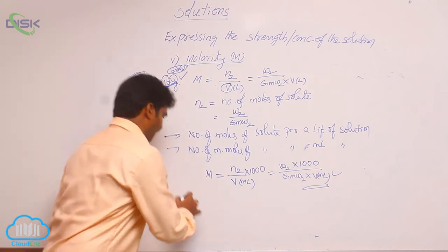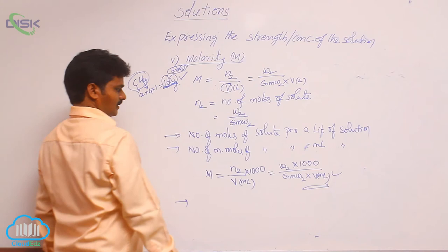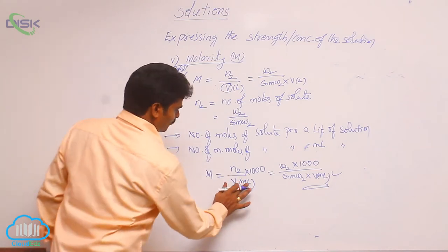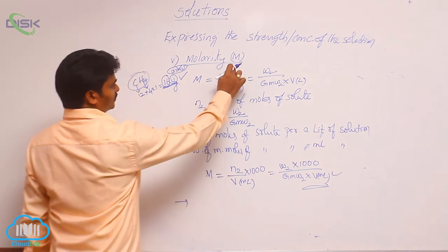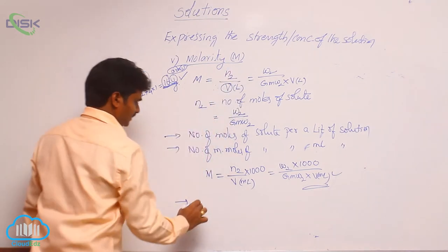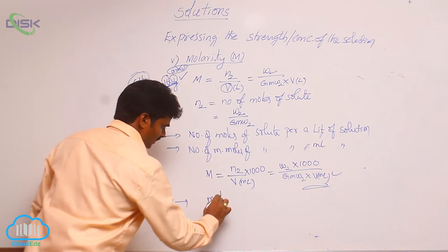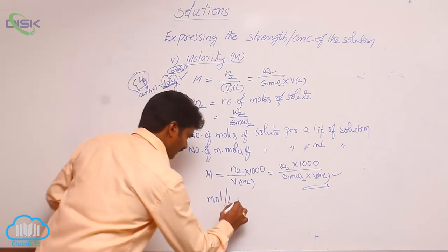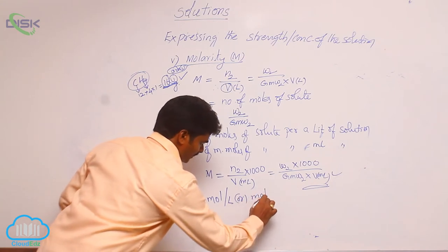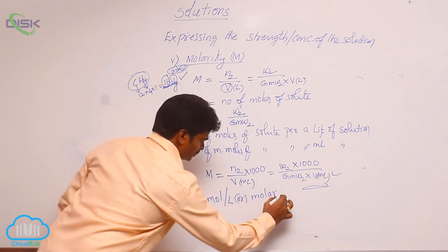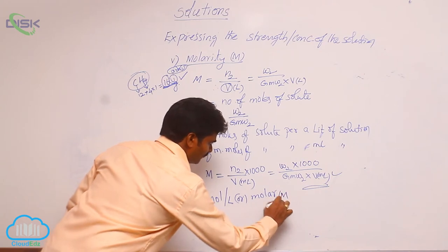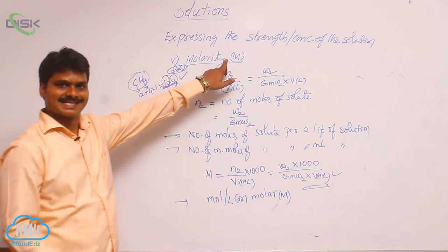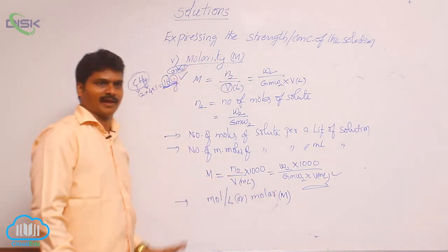From this formula, what are its units? Here it is moles and volume is in milliliters. So units of molarity are mol per liter, also called molar. We also use capital M for molarity. So capital M is both the symbol and the unit of molarity.